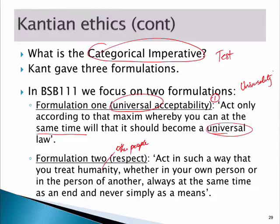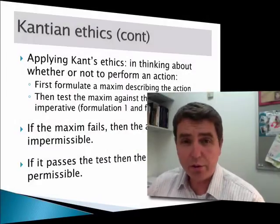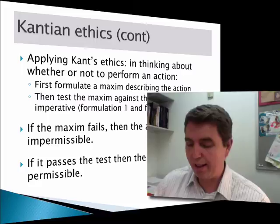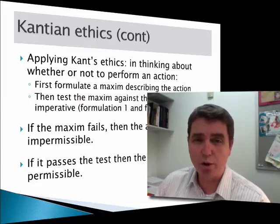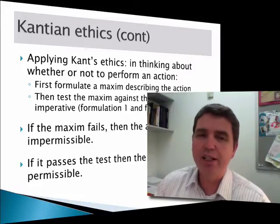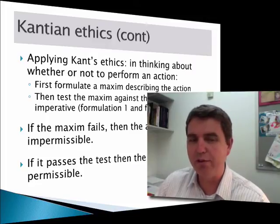The third formulation, which we don't deal with, is that you're not responsible for others' ethical acts — you're your own moral king or queen. But those first two are what we're going to concentrate on. Kant's approach requires us to start by thinking about a maxim, or a general rule that would develop from the behaviour we're thinking about. We then apply those tests: universality and respect.